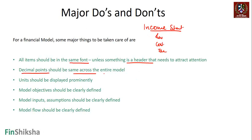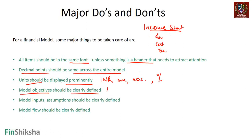Decimal points should be the same across the entire model. Units should be displayed prominently - is it INR? Is it INR million? Is it in numbers? Is it in percentage? You have to basically put a column and put all those numbers there.